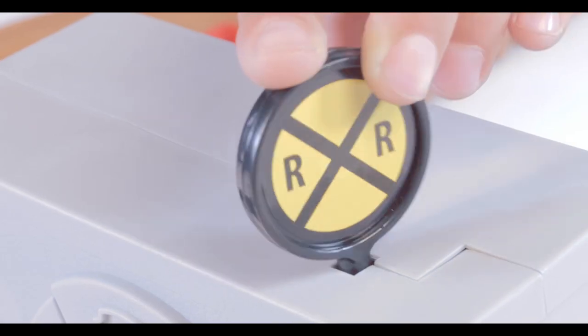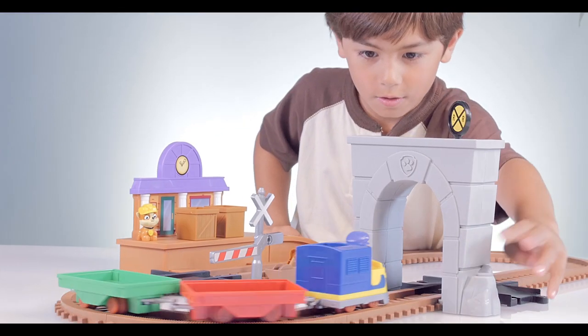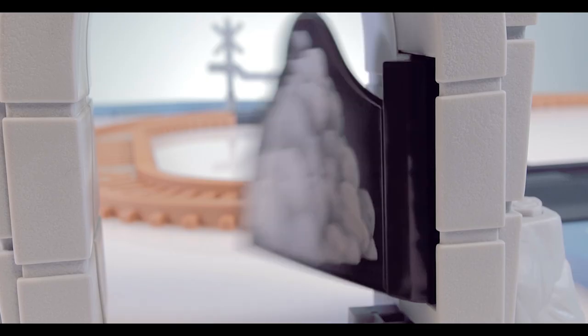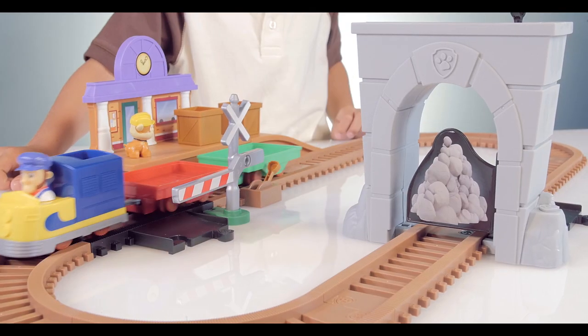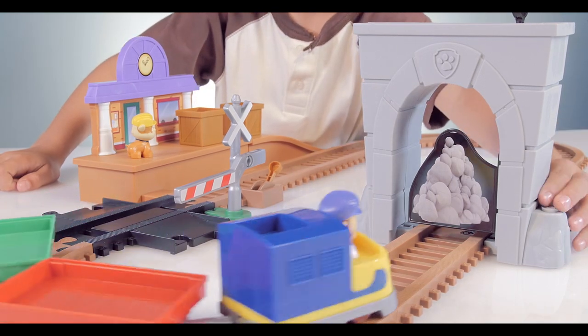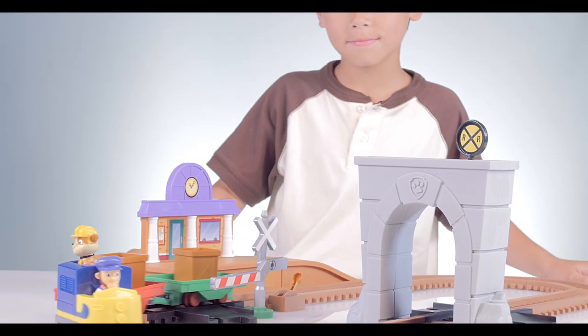Oh no, there's a rock slide blocking the tracks! Good thing Rubble is ready to save the day! You can rotate the railway sign on top of the tunnel to block the tunnel with rocks, and press the badge button on the tunnel to unblock it.